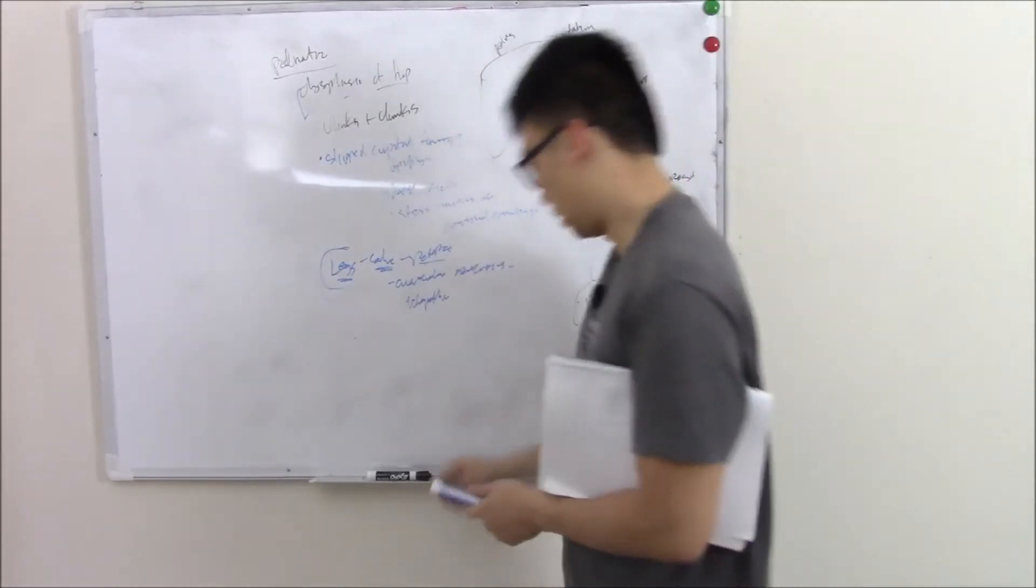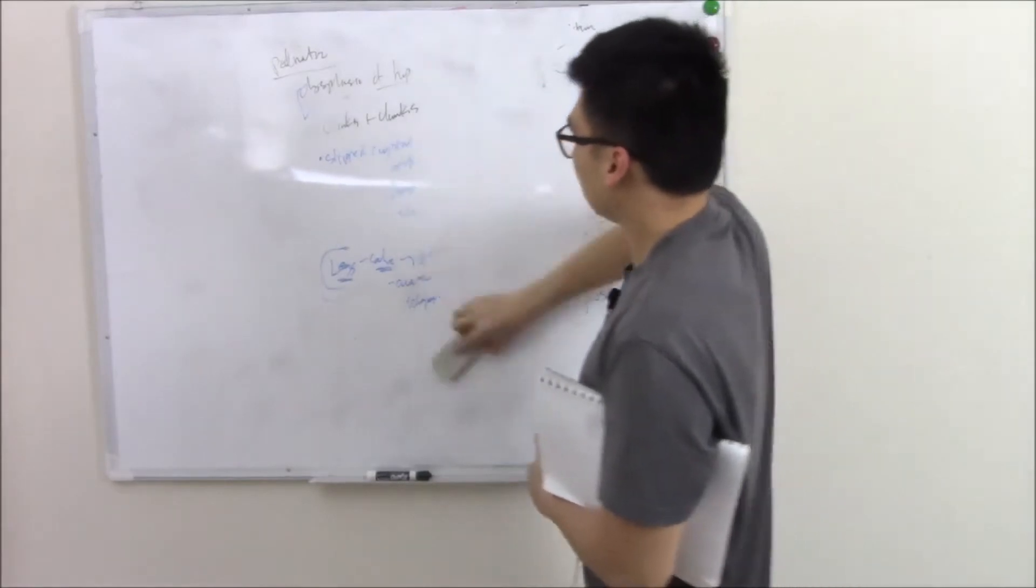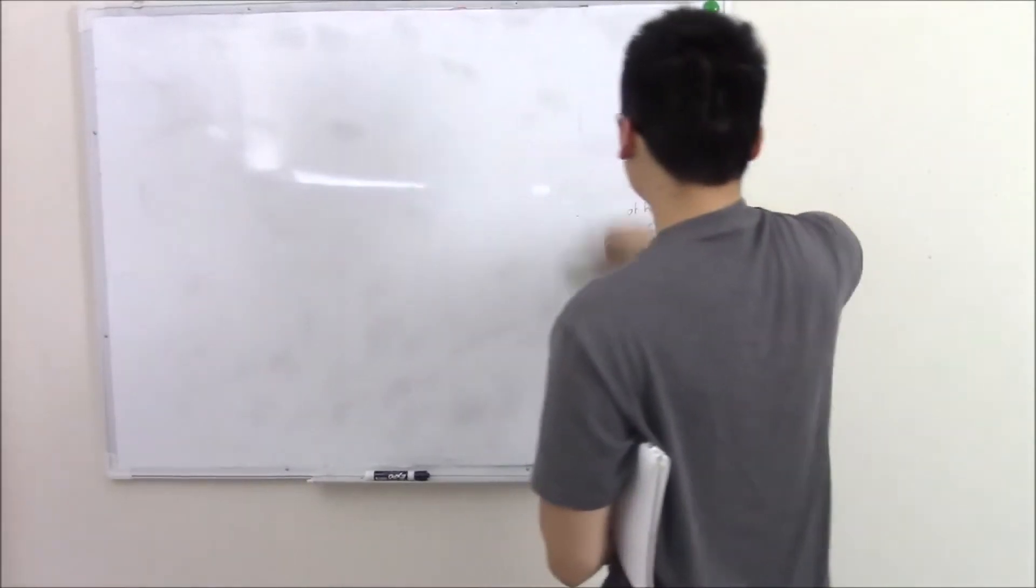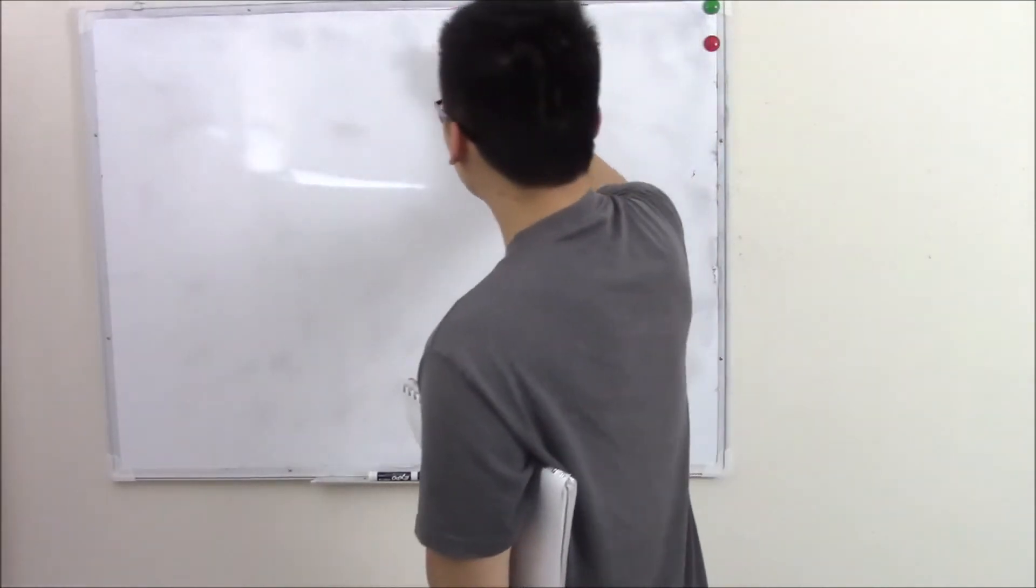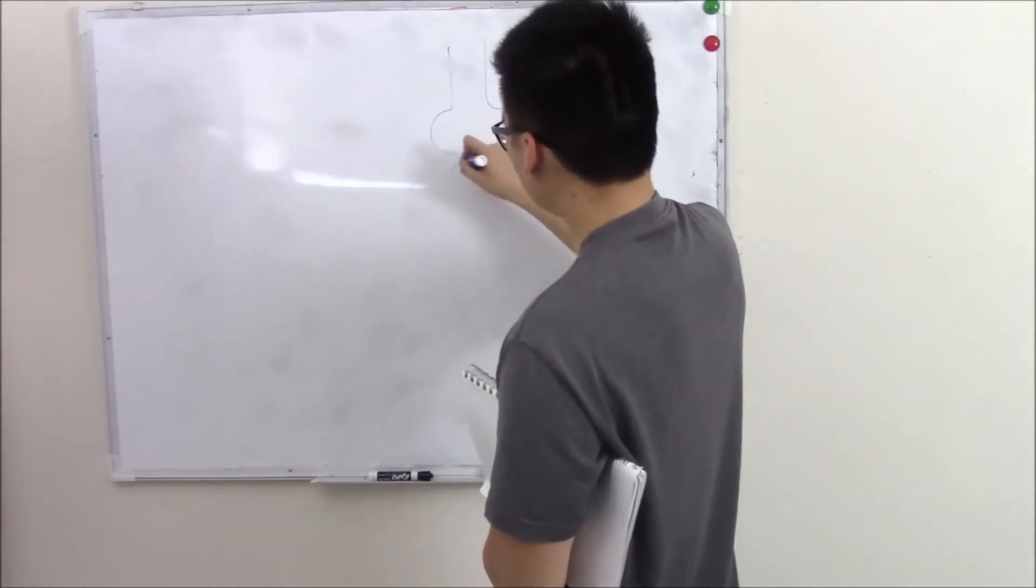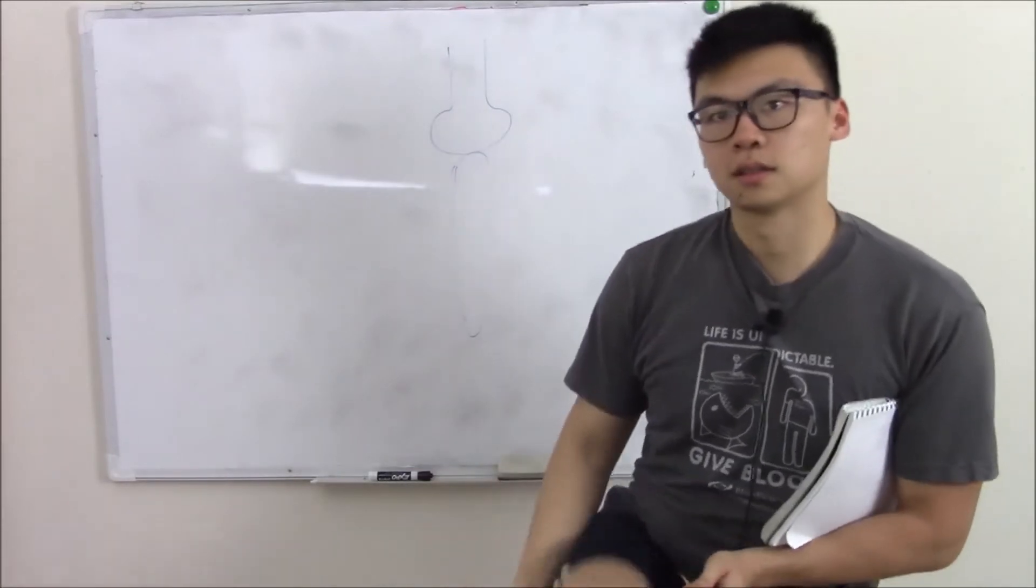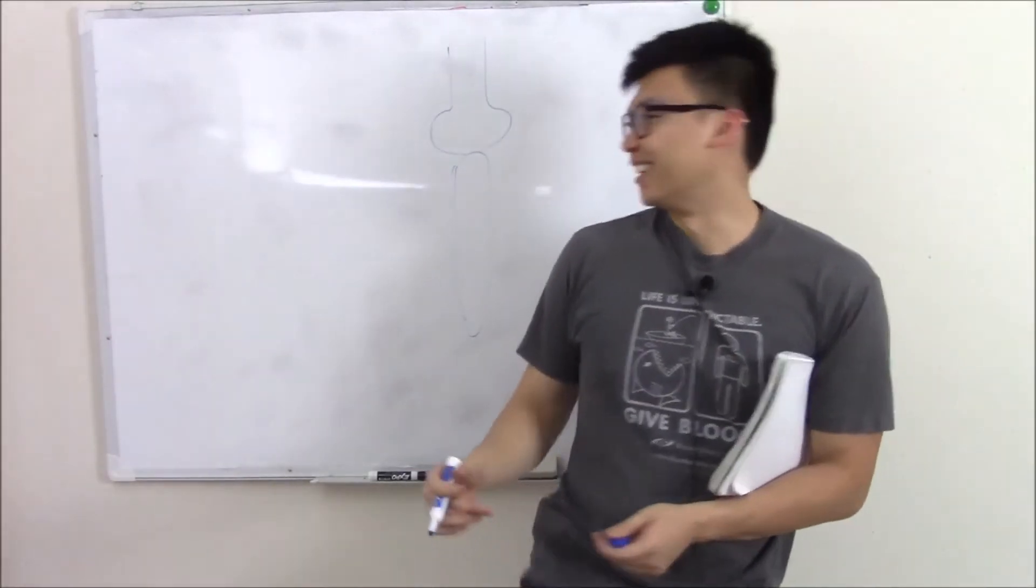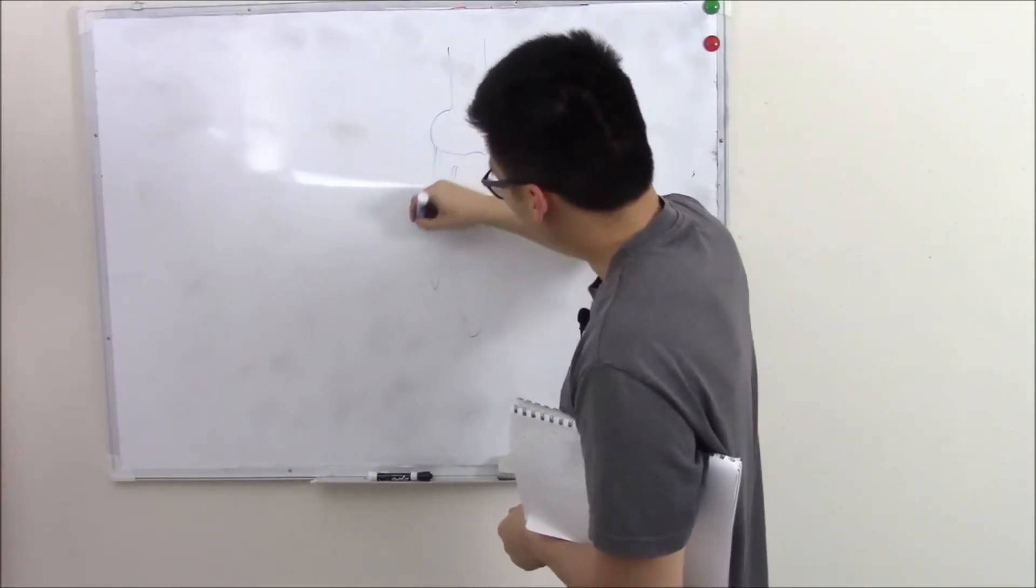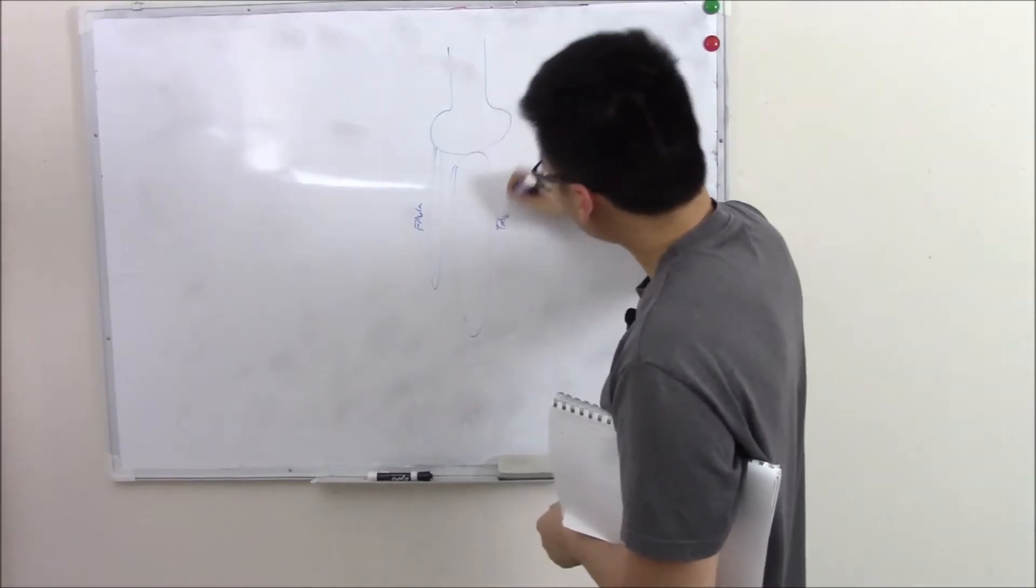Now let's move on to the knee. The structure of the knee can be quite complex, so we'll just draw it out. If this is your femur, and this is your tibia, aka your shin bone, then lateral to it you'll have your fibula. This is your tibia, this is your femur.